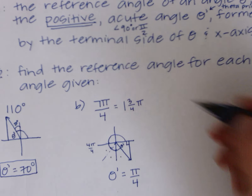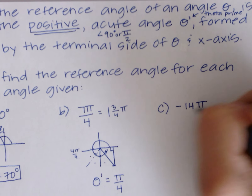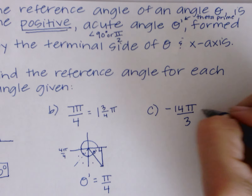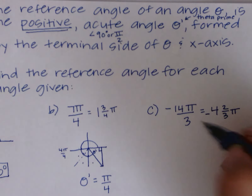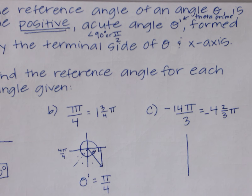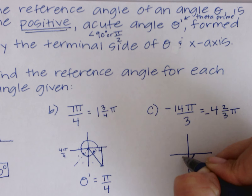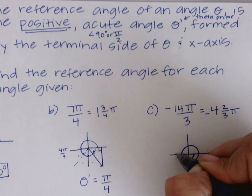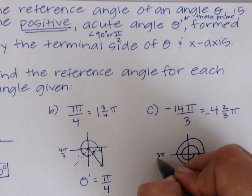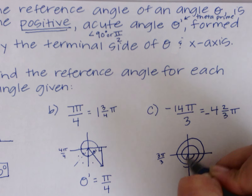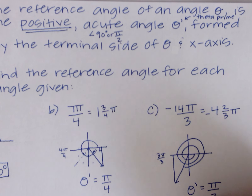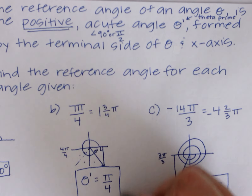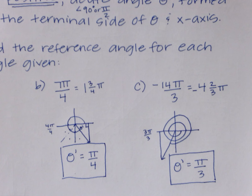Example 5c: find the reference angle for -14π/3. First simplify: 14 ÷ 3 = 4 remainder 2, so this is -4 and 2/3 π. Going clockwise: -π, -2π, -3π, -4π, then two-thirds more, which is 2π/3 past -4π. The angle back to the x-axis is π/3, so θ' = π/3. Remember: reference angles are never negative — we double-underlined that in the definition.